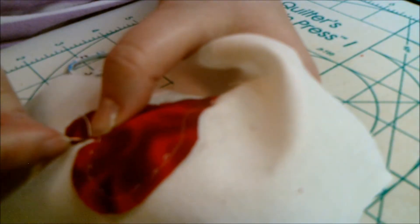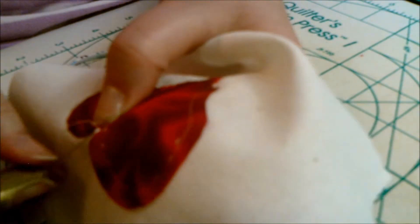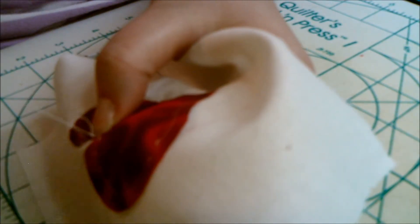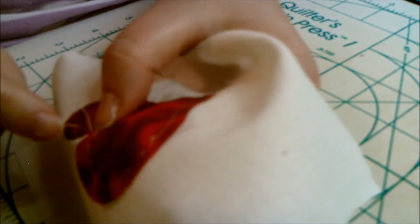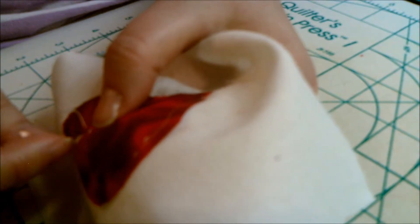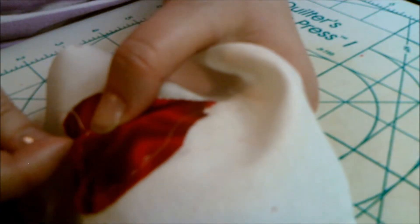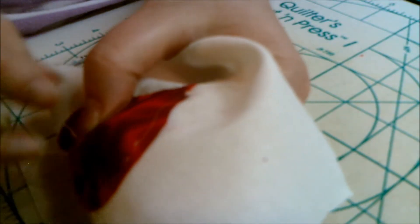When you get to where the point is, sometimes this means taking very tiny stitches, you're going to bring your needle up right on the inside of that point, just on the other side of where you've clipped, like on the other side of your line.